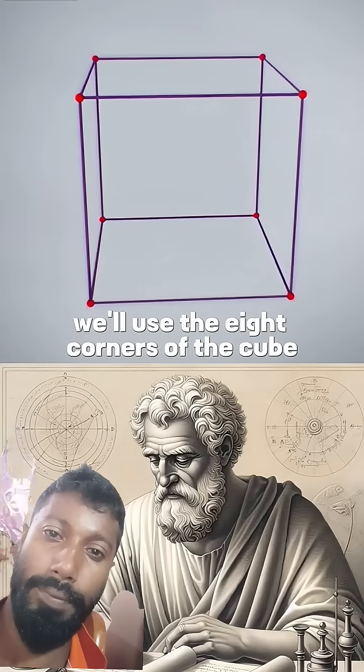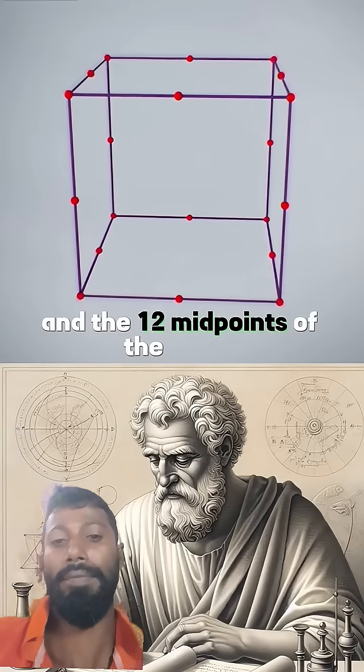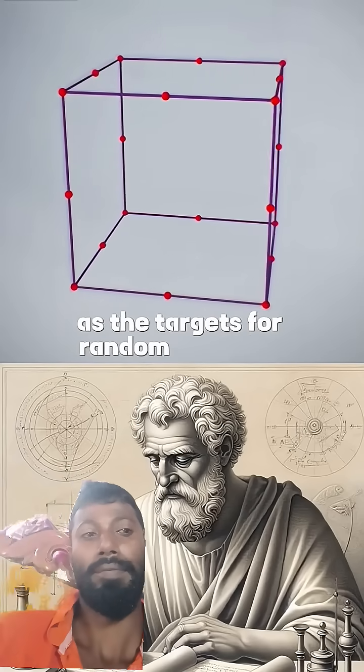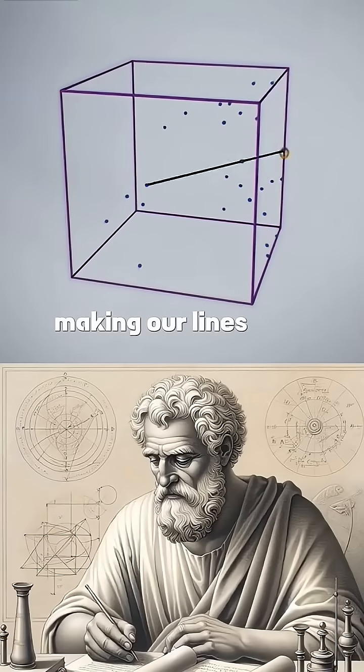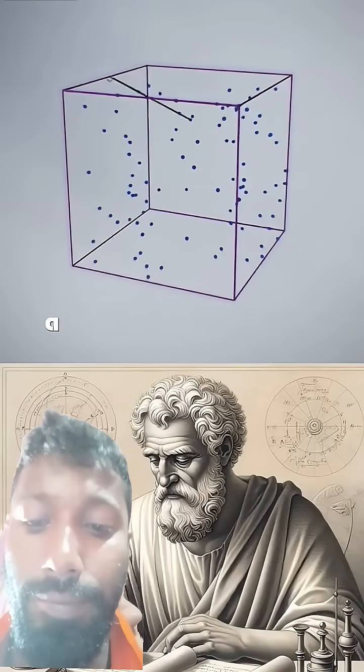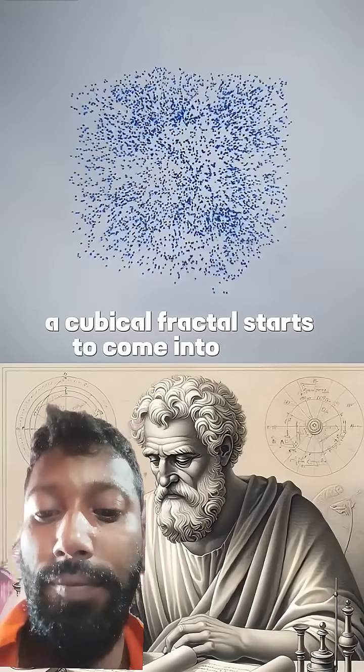We'll use the eight corners of the cube and the twelve midpoints of the edges as the targets for random selection. Making our lines with marks at the two thirds point, a cubical fractal starts to come into focus.